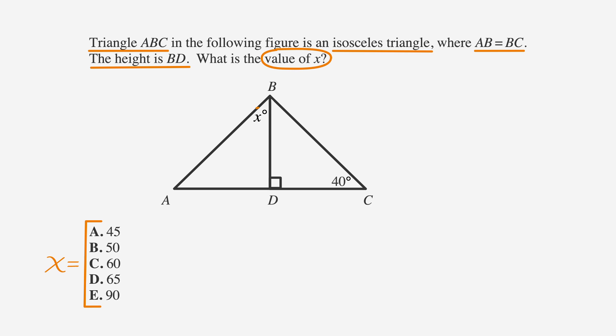The problem states that triangle ABC is an isosceles triangle where AB equals BC. Let's label that in the drawing. If AB and BC are equal, then the angles opposite them must also equal each other, so angle A equals angle C. Therefore, angle A is also 40 degrees, and angle D is 90 degrees.